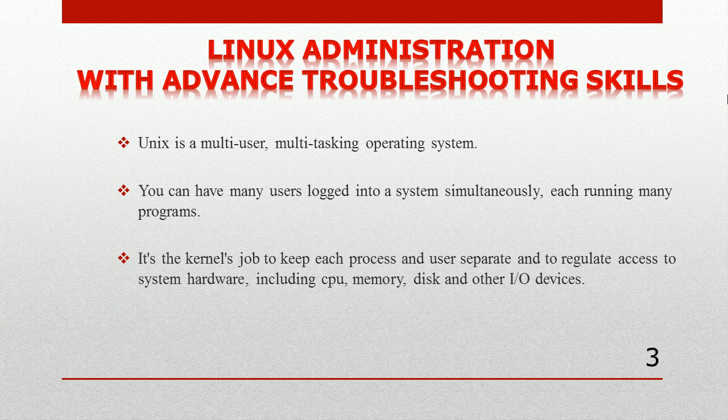So, what is UNIX? UNIX is a computer operating system. As everybody knows, an operating system is the program that controls all the other parts of the computer system — both the hardware and software. It allocates computer resources and schedules tasks. UNIX is a multi-user, multitasking operating system.